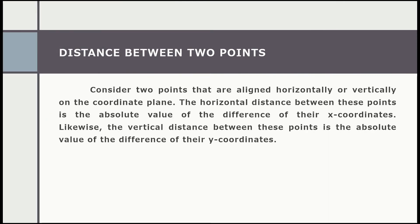Let's consider two points that are aligned horizontally or vertically on the coordinate plane. The horizontal distance between these points is the absolute value of the difference of their x-coordinates. Likewise, the vertical distance between these points is the absolute value of the difference of their y-coordinates. If we talk about horizontal distance, we get the absolute value of the difference of their x-coordinates. But if it is a vertical distance, we get the absolute value of the difference of their y-coordinates.